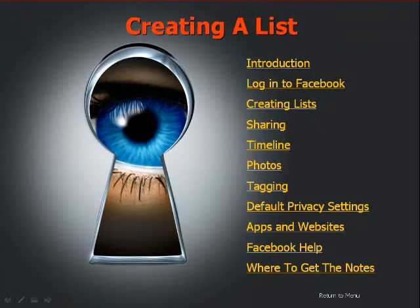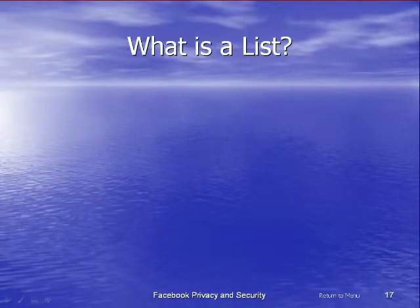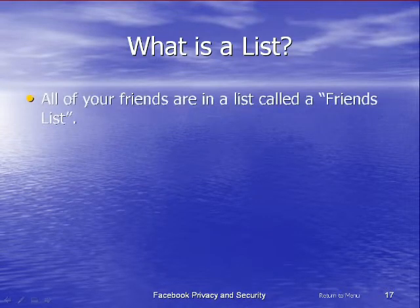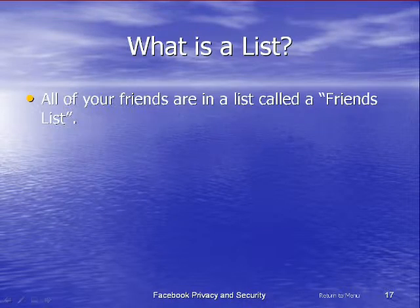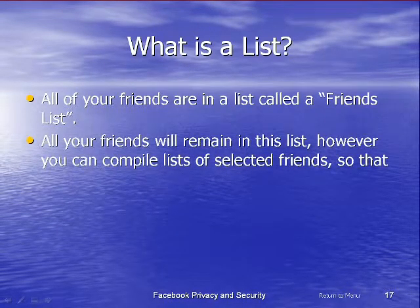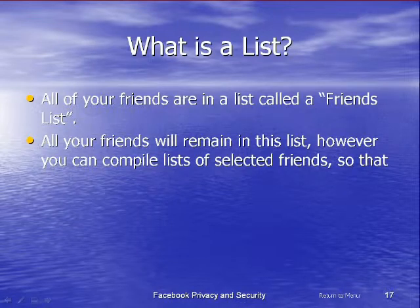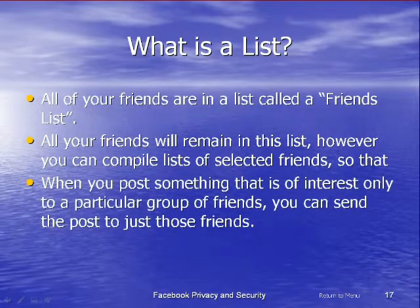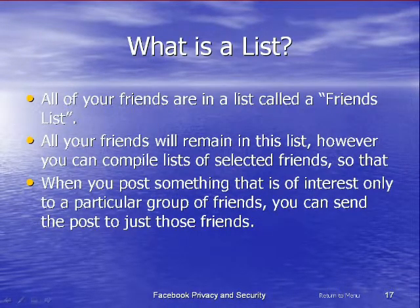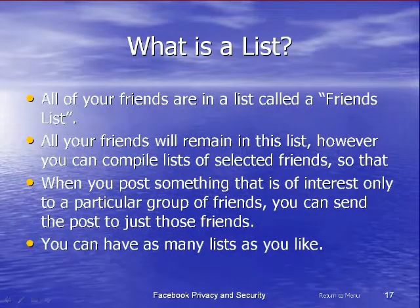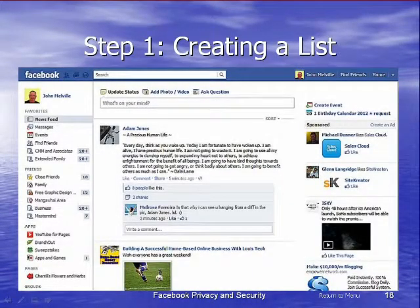Now we need to go and create a list. What is the list? All your friends are in a single list called the friends list. It is simply a list of all your friends altogether. All your friends will remain in this list even if you have multiple lists. However, you can compile lists of selected friends so that when you post something of interest only to a particular group, you can send the post to just those friends. You can have as many lists as you like.